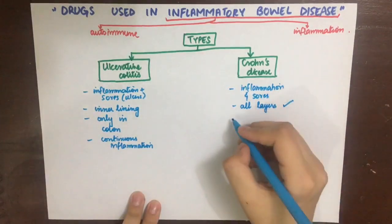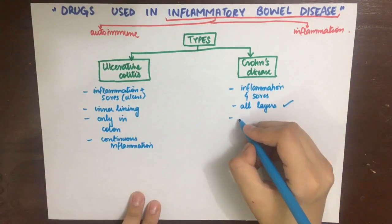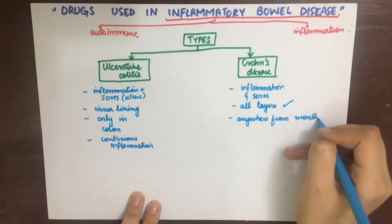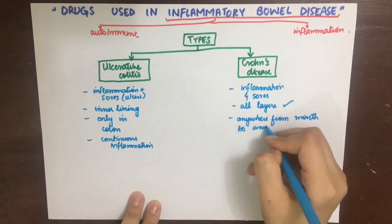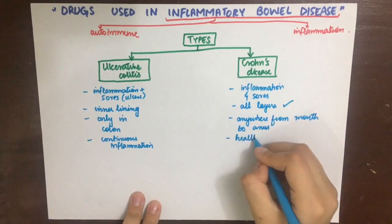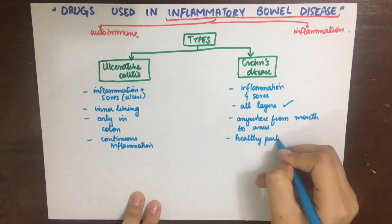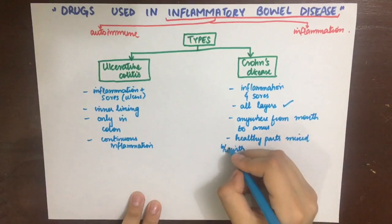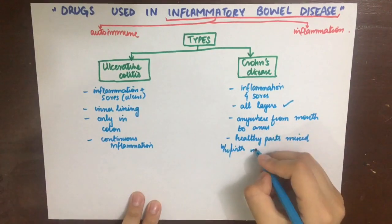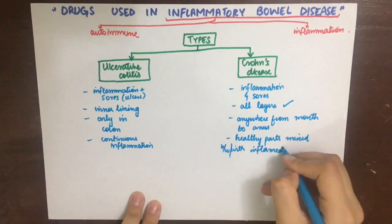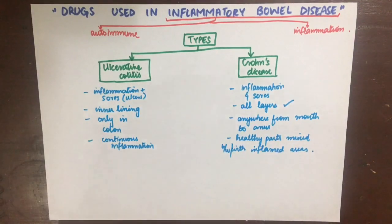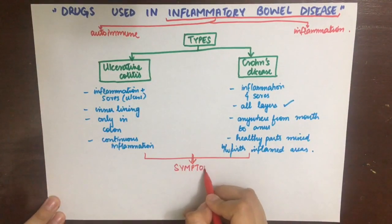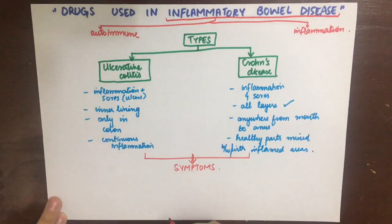Ulcerative colitis involves continuous inflammation, while in Crohn's disease there are healthy parts of the intestine mixed with the inflamed parts. The symptoms of both are about the same — diarrhea, bleeding, abdominal discomfort, anemia, and weight loss.